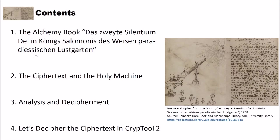In the first part we will have a look at the aforementioned book, the alchemy book Das zweite Silentium Dei in Königs Salomones des Weisen Paradiesischen Lustgarten. As you can see it's a German book. In the second part we will have a look at the ciphertext and the holy machine which you can see here on the right side. Then we will perform a small analysis of the ciphertext and we will see a decipherment of the book. And finally we will decipher the ciphertext in CrypTool 2.